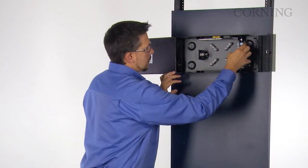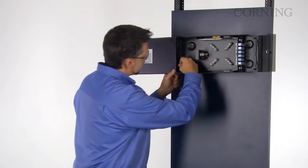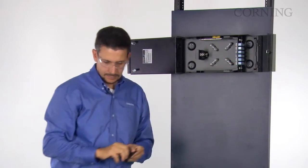Now that you have terminated the fiber, you can remove the strain relief bracket by lifting the plunger and remove the bracket from the housing by pulling it towards yourself.